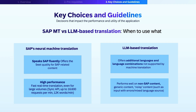Let's discuss key decisions that impact the performance and utility of your AI applications — specifically, SAP Machine Translation compared with LLM-based translation. SAP Neural Machine Translation speaks SAP fluently and delivers the best quality for SAP-related content. It offers high performance with fast real-time translation even for large volumes — through its synchronous API, you can handle up to 16,600 requests per minute and about 12,000 words per minute. LLM-based translation provides additional languages and combinations that machine translation may not support, and performs well on non-SAP content and generic noisy inputs such as text with errors or mixed language sources. In short, choose SAP Machine Translation for SAP-specific text and maximum throughput; choose LLM-based translation for broader language coverage and messy or mixed inputs.